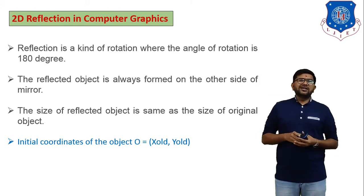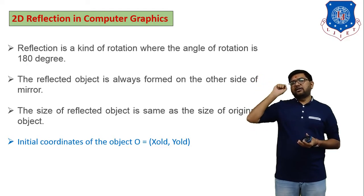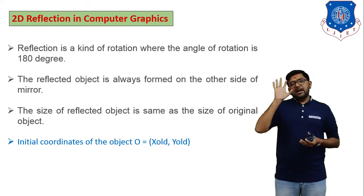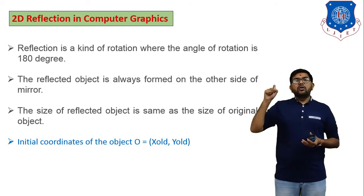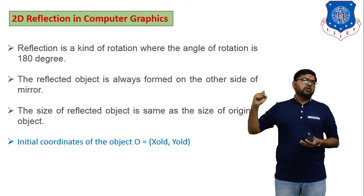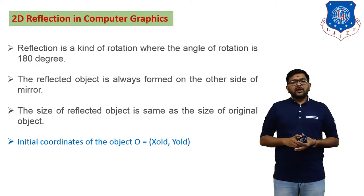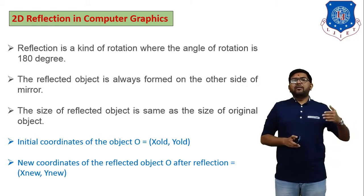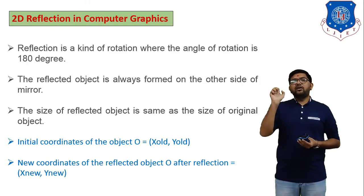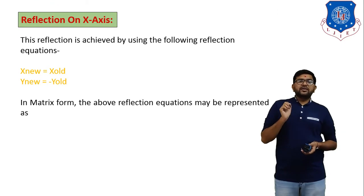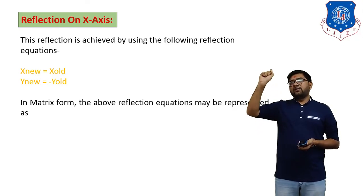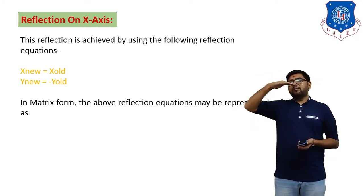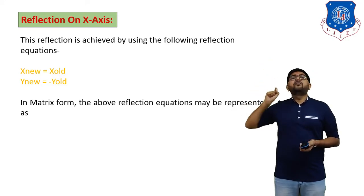To derive the equations of reflection, we consider one point in the first quadrant with coordinate (x_old, y_old). We have to derive two equations: first, reflection about the x-axis, and second, reflection about the y-axis. If we find the reflection of a point about the x-axis, and that point is in the first quadrant, the reflected point will appear in the fourth quadrant.